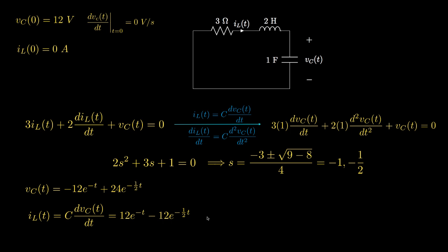As a final note, the resistor voltage can be obtained by multiplying the inductor current by 3. If we want the voltage across the inductor, we use the relationship V_L = L·(dIL/dt) — differentiating the current expression and then multiplying by the inductance, which is 2.